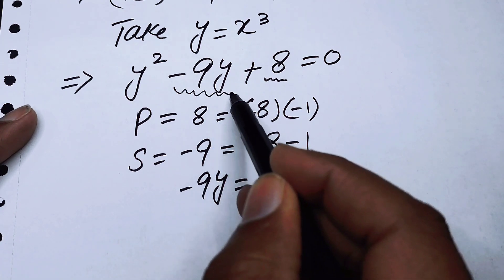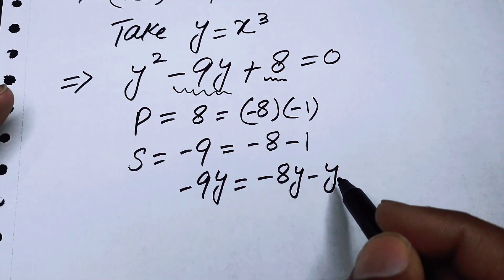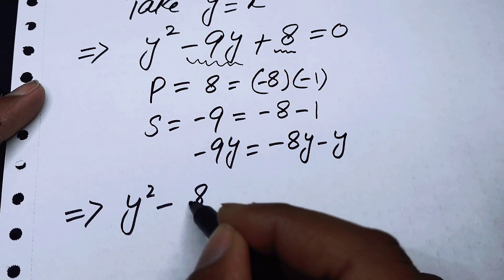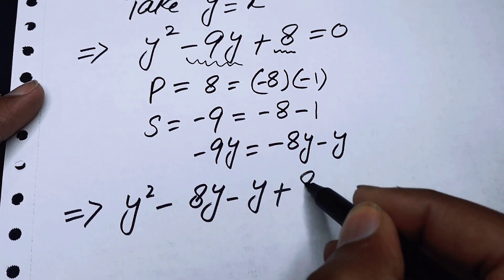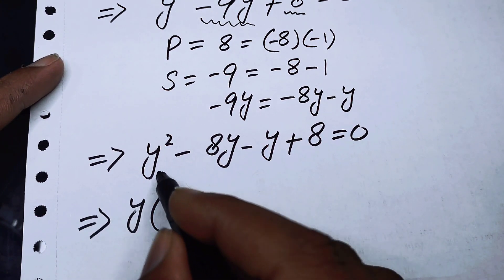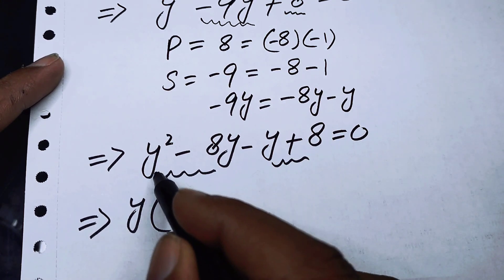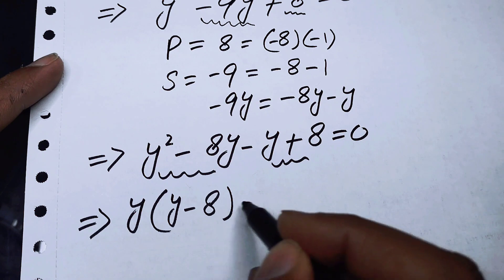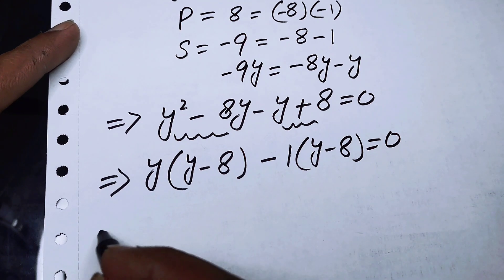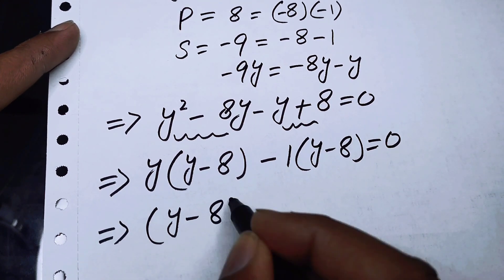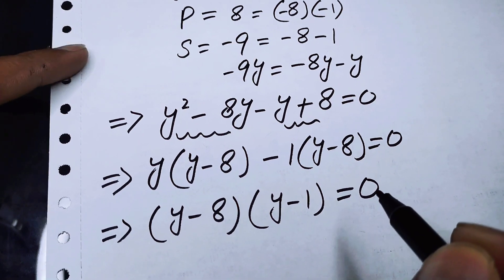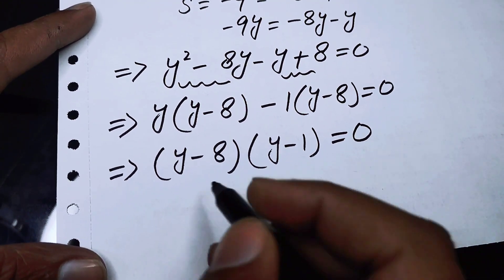We replace minus 9y with minus 8y minus y, giving us y squared minus 8y minus y plus 8 equals 0. Now we take y common from the first two terms and minus 1 common from the last two terms, giving y(y minus 8) minus 1(y minus 8) equals 0.